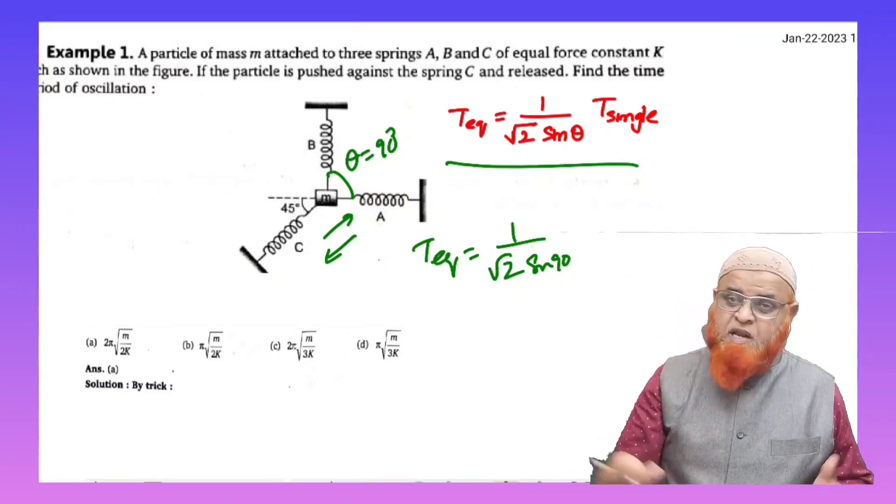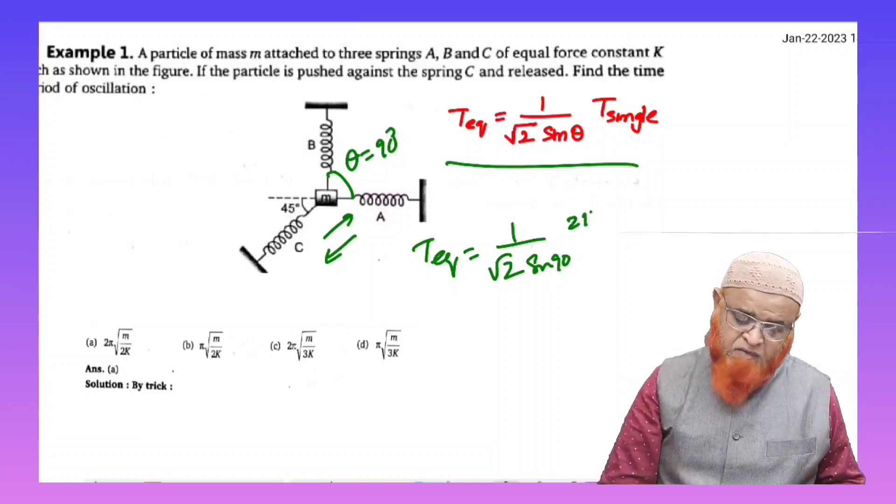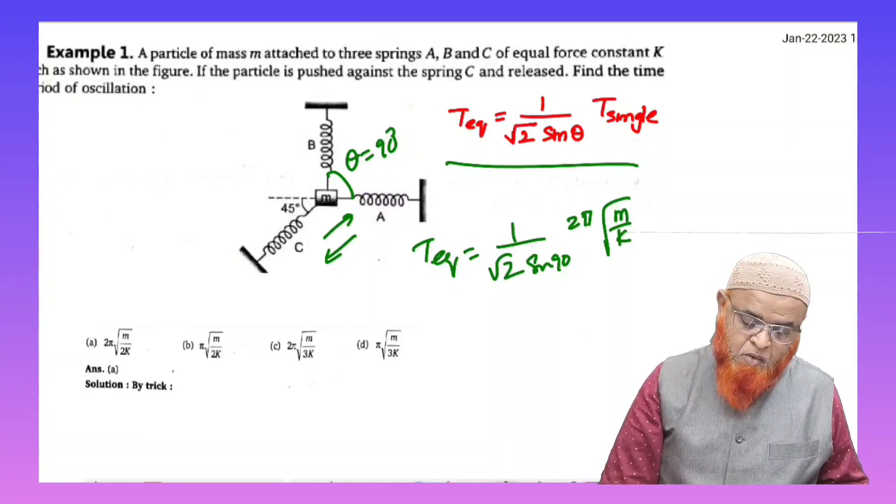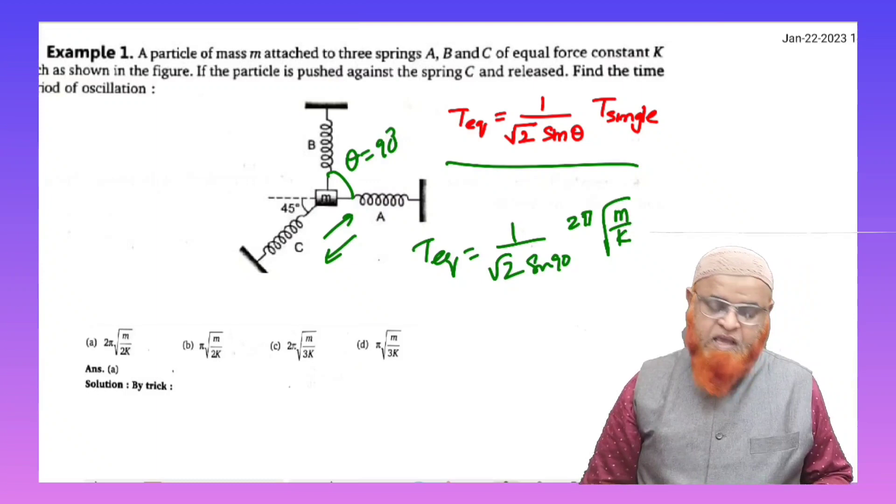T single means for a single spring, what is the formula you are using? The same formula you have to use here. What is that formula? 2π√(m/k), that's it.